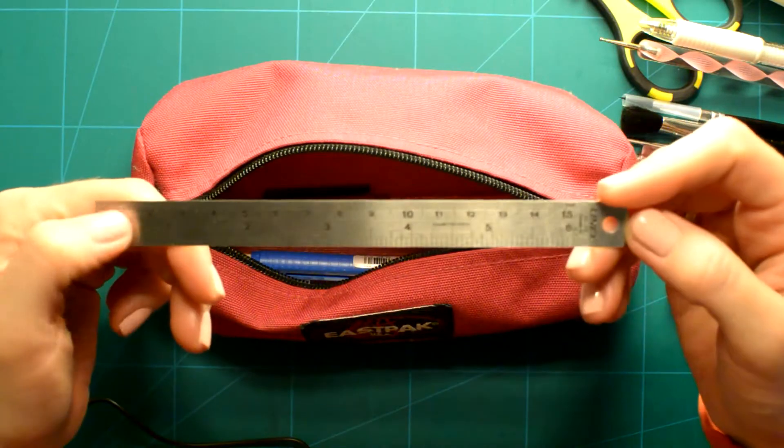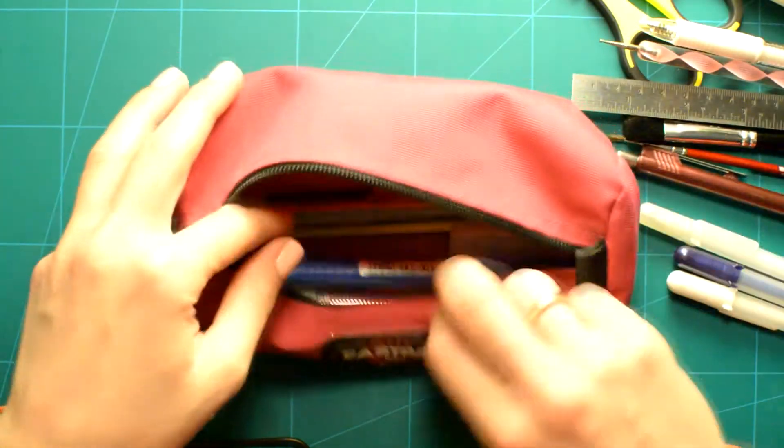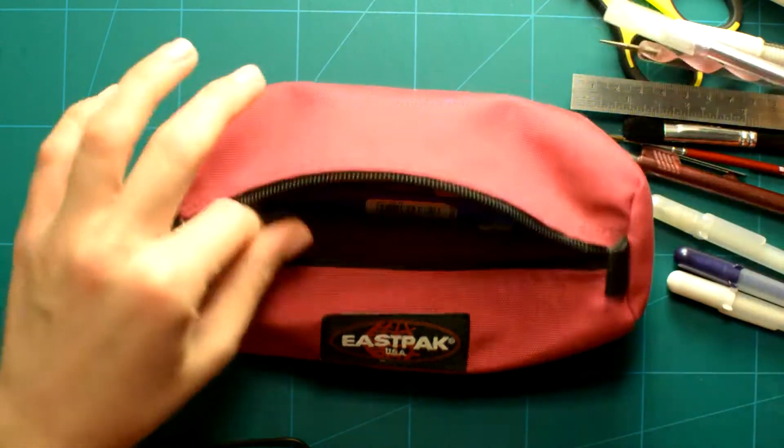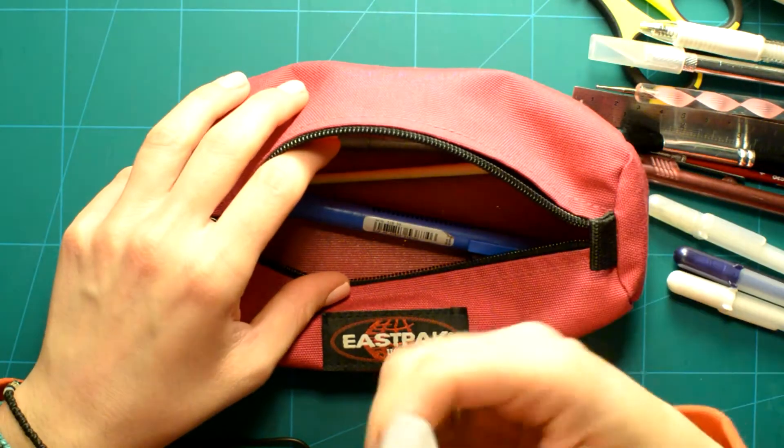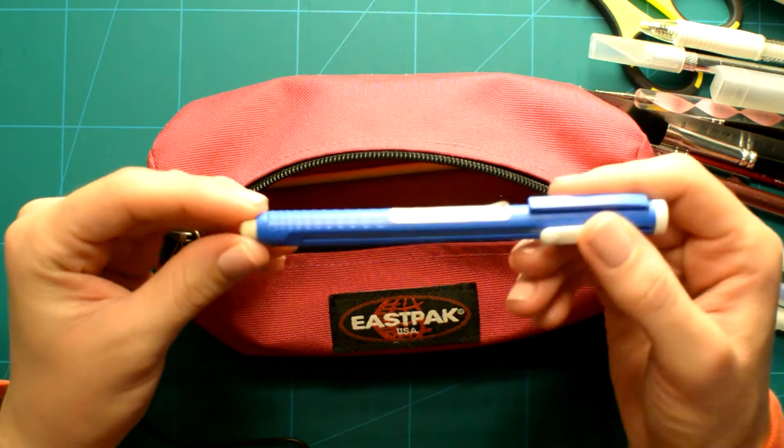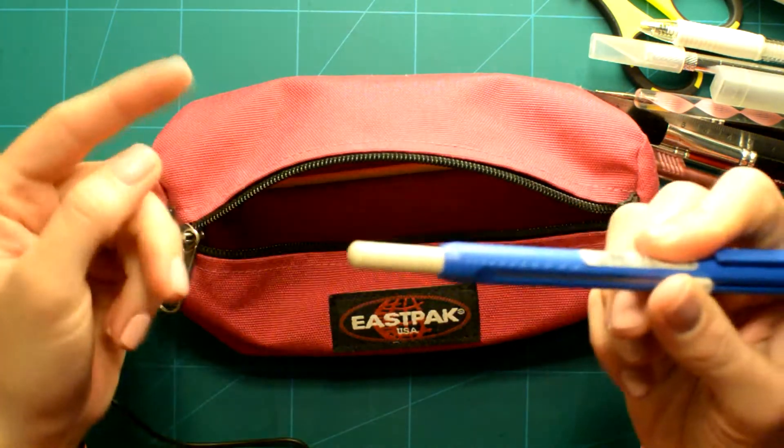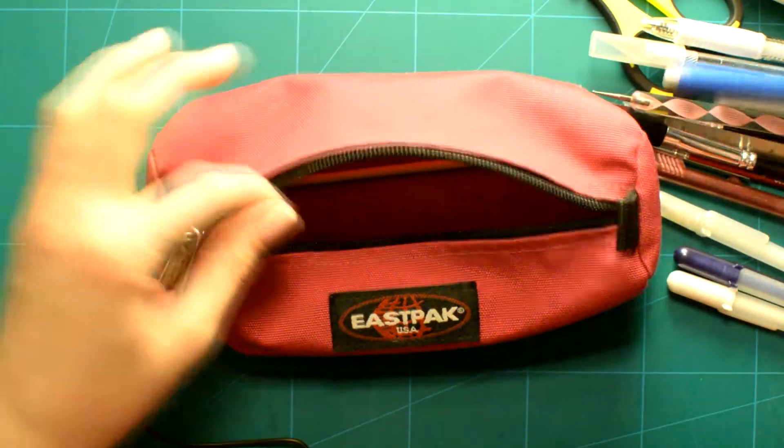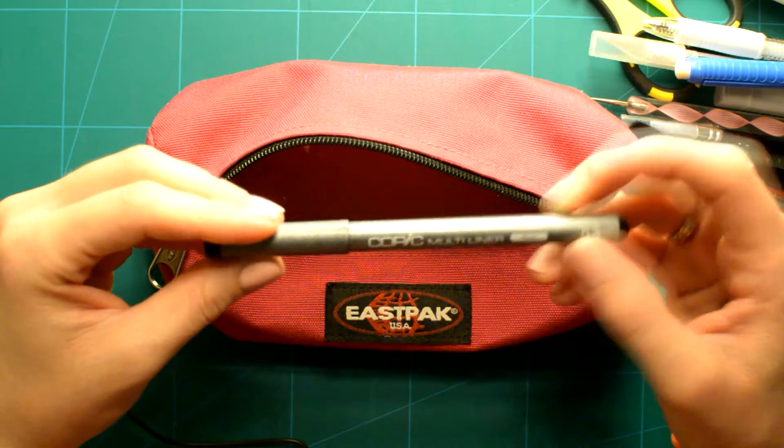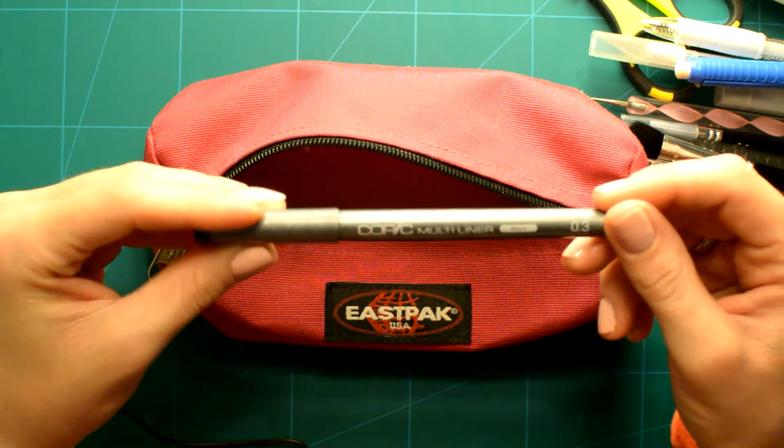I've got a ruler, an exacto knife, blades for my exacto knife, a rubber, which is really useful. And my comic multiliner in 0.3.